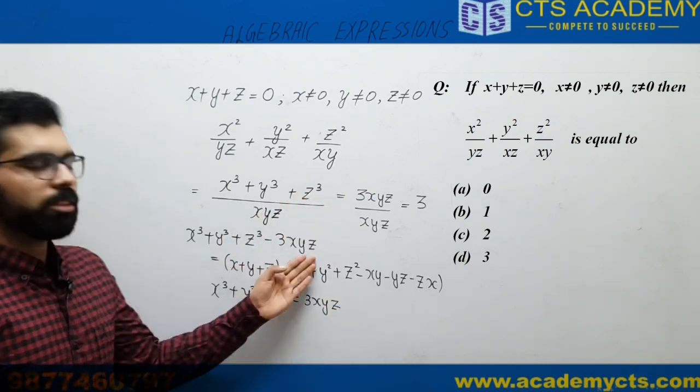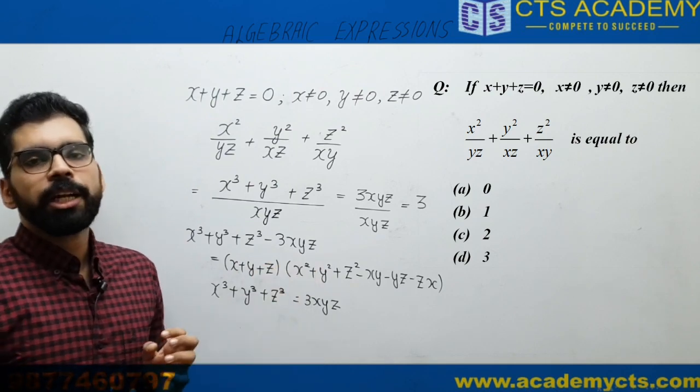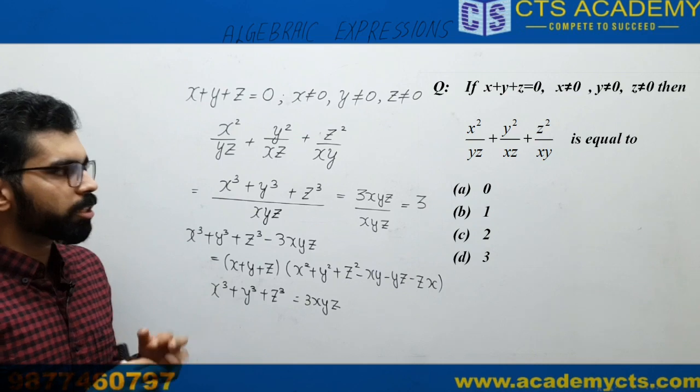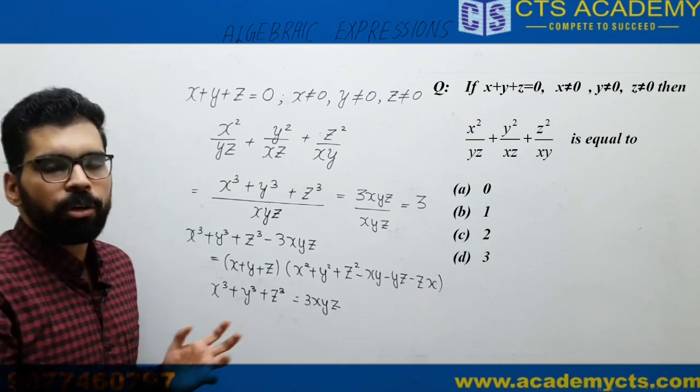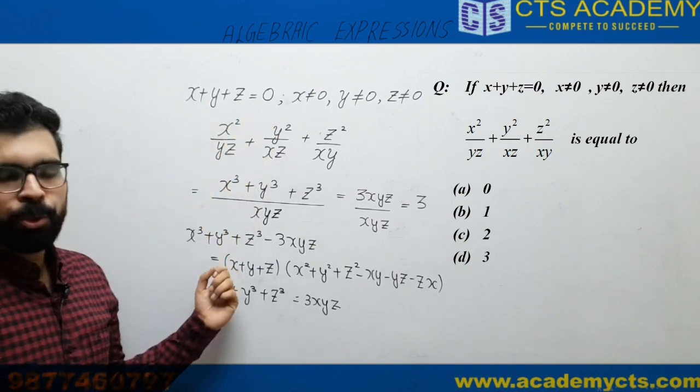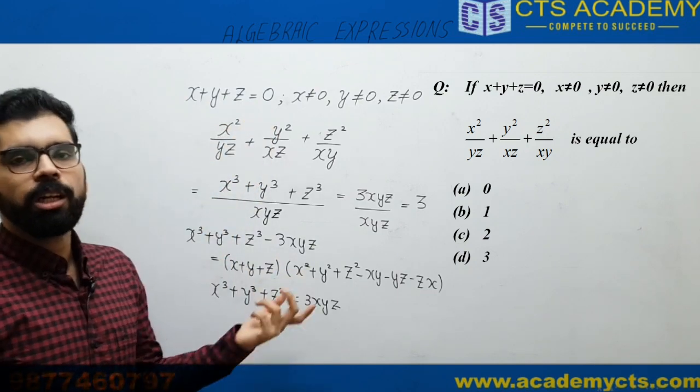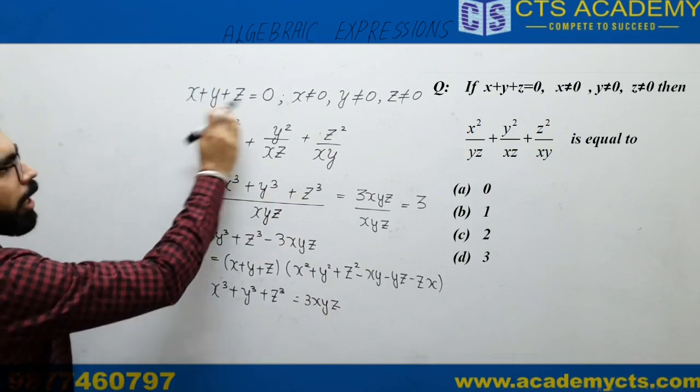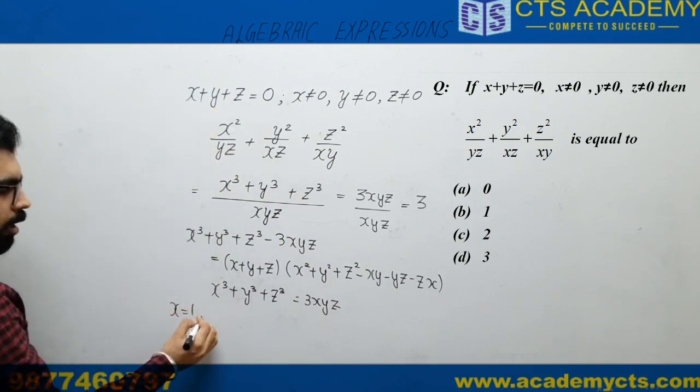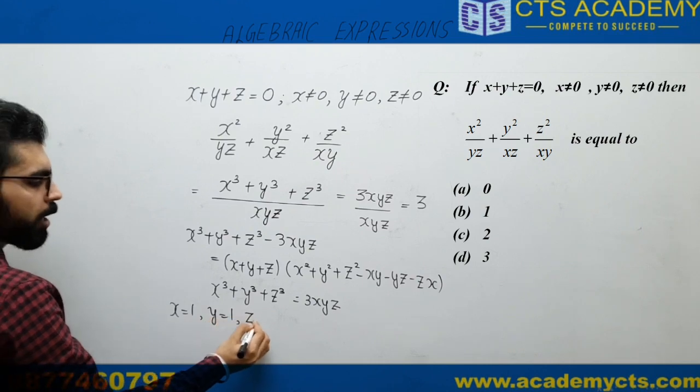Generally we solve the question by this method. But sometimes we forget which identity to use, and at the time of exam you get nervous and forget the identity. In case you forget how to use this identity, we can do it in a very quick way. If you are given x + y + z = 0, you just put x = 1, y = 1, and z = -2, which satisfies this equation.